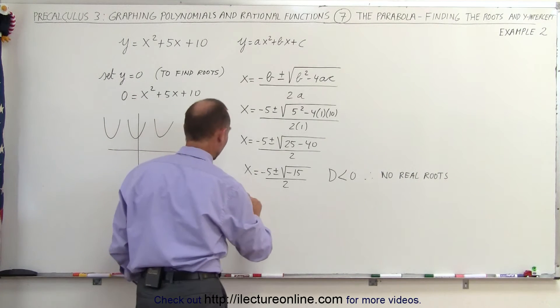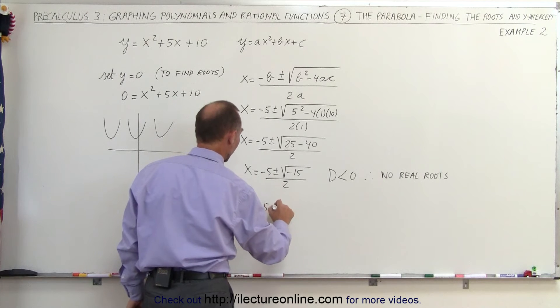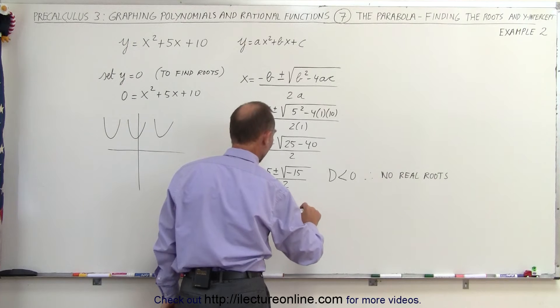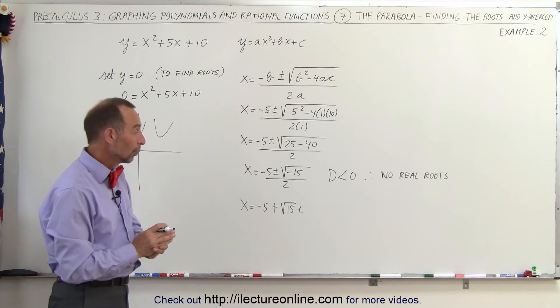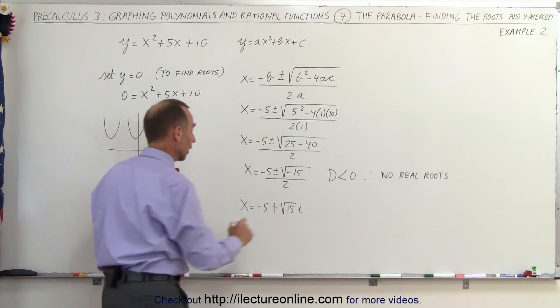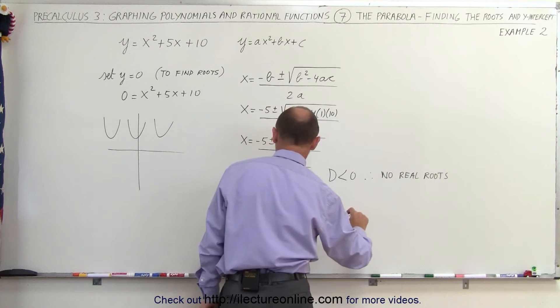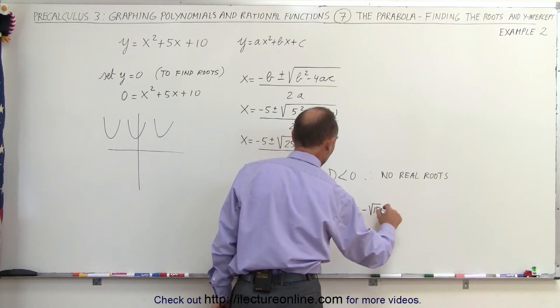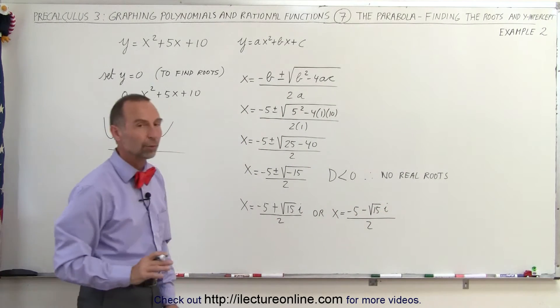What we can say is that x is equal to either minus 5 plus the square root of 15 times i. When we factor out a square root of negative 1, we call that equal to i, divided by 2. Or x is equal to minus 5 minus the square root of 15 times i divided by 2. So those would be the two imaginary roots.